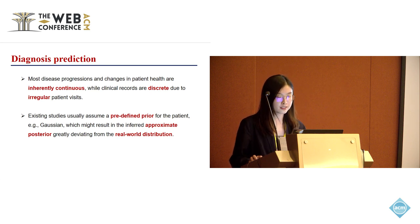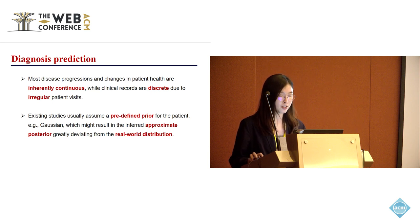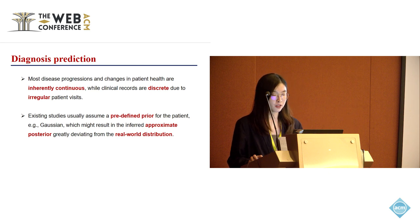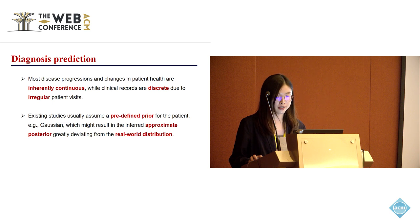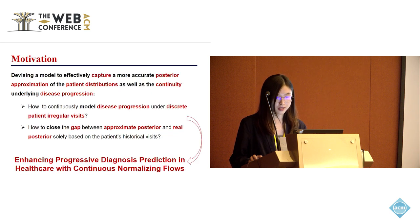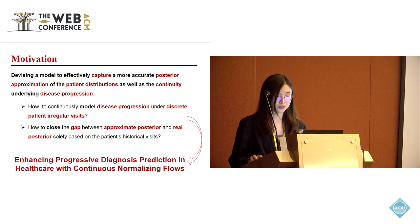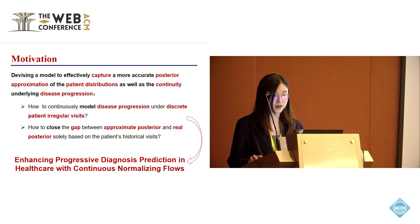However, existing studies usually assume a predefined prior for the patient, for example Gaussian, which might result in the inferred approximate posterior greatly deviating from the real-world distribution. Therefore, it is important to devise an ideal model to effectively capture a more accurate posterior approximation of the patient distributions, as well as the continuity underlying disease progression.